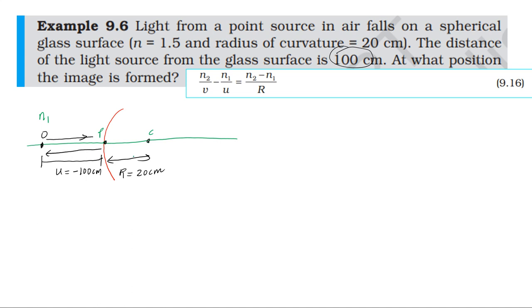We can use equation 9.16 and substitute the values. The equation is: n2 divided by image distance v, minus n1 divided by object distance u, equals n2 minus n1 divided by R.